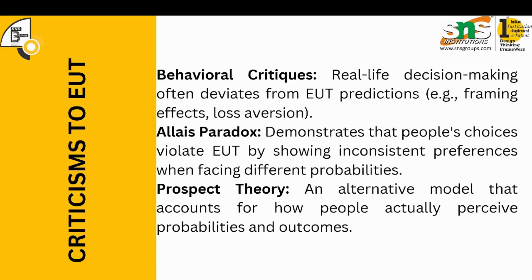There are several major criticisms of expected utility theory. Behavioral scientists believe that in addition to EUT predictions, there are several other real-life decision-making parameters such as loss aversion, framing effects, and other cognitive biases. It's not just about expected utility, but also about many cognitive aspects. The Allais paradox demonstrates that people's choices violate expected utility theory by showing inconsistent preferences — at different situations and probabilities, preferences differ, and a decision is influenced by both probability and the situation one is in.